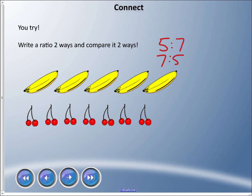For bananas to the whole, I have five bananas. How many are altogether? There are five bananas and seven cherries, so twelve fruit total. That's 5:12. To compare cherries to all the fruit, I write 7:12.